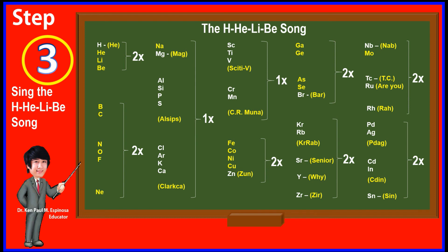Na mag-alsips, Clarkas. Ki, tibi, si, armona. Fe, ko, ni, ko, zun. Fe, ko, ni, ko, zun.